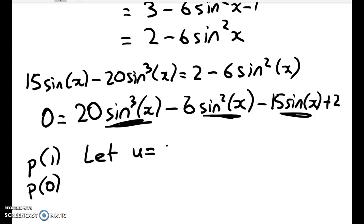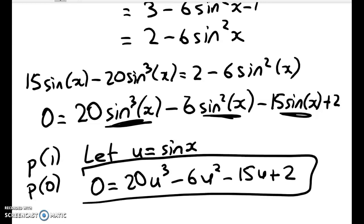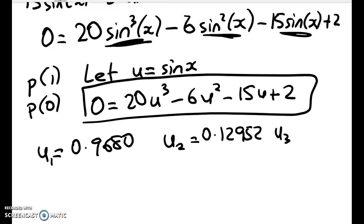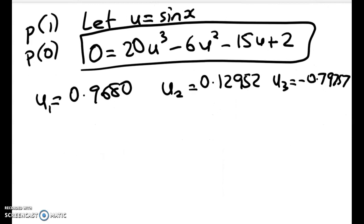So let's let u equal sine x. Then we've got this equation: 0 is equal to 20 u cubed minus 6 u squared minus 15 u plus 2. We're going to put that in our calculator, and we're going to solve it. And we know that we should get three solutions because it's a polynomial of degree 3. We'll have either one real or we'll have three real. And it turns out that we get three real solutions. So we get u equals 0.9680. We'll call that u1, u2. The second root is 0.12952, and the third root is this one here.